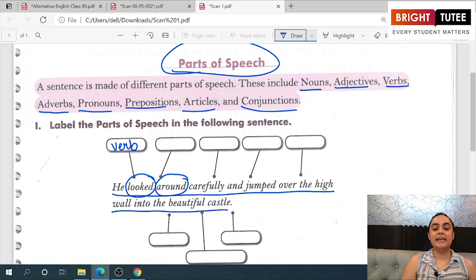'Around' is telling you about the position of the place where this person looked. So position is being talked about of the noun. This is a preposition.